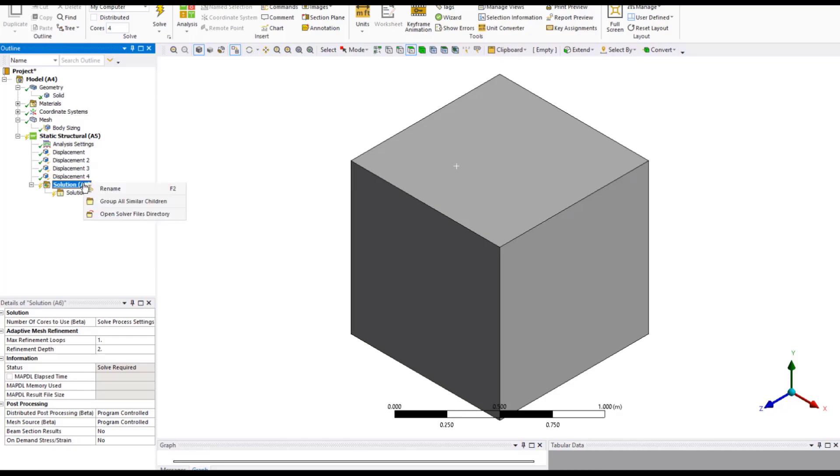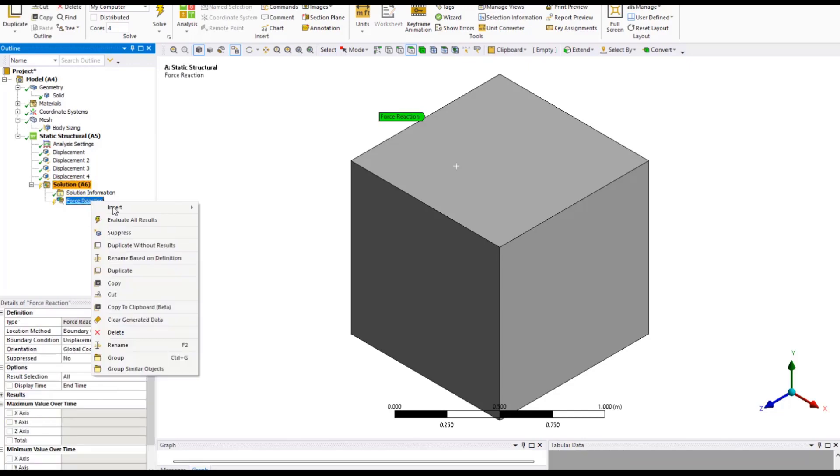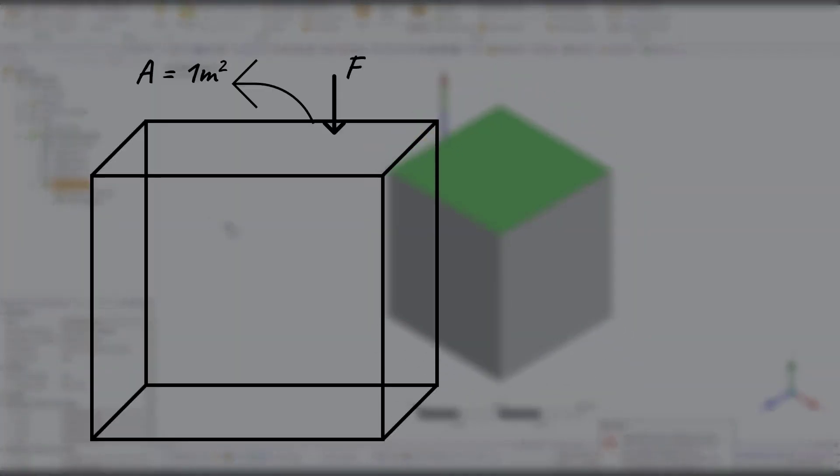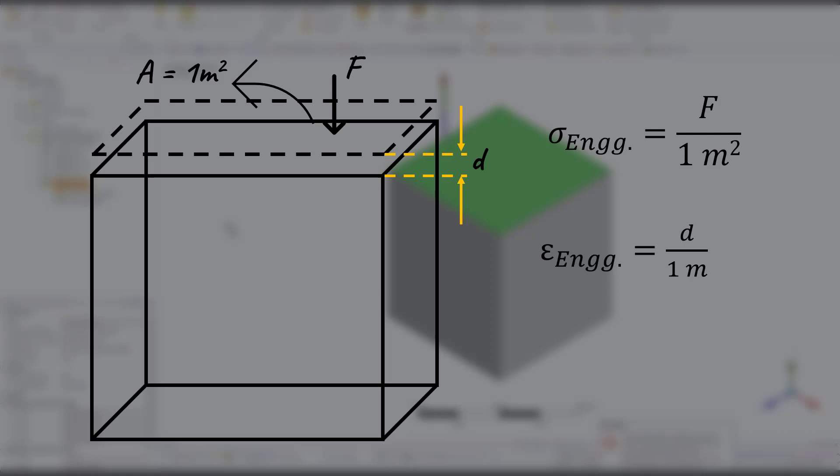Now that the solution is available, go ahead and drag and drop the displacement object that was used to define loading to solution to create a force-reaction probe to displacement object. Note that the area of cross-section of the cube in undeformed configuration is 1 meter square, and the ratio of reaction force to initial area of cross-section is engineering stress in the material. Therefore, the numerical value reported by this force-reaction probe is equal to the engineering stress in the part in Pascal units. Also, the ratio of displacement in Y to its length in Y, which is 1 meter, is same as engineering strain. Therefore, the numerical values reported by the force-displacement chart from this unit cube are equal to the engineering stress and engineering strain developed in the material.